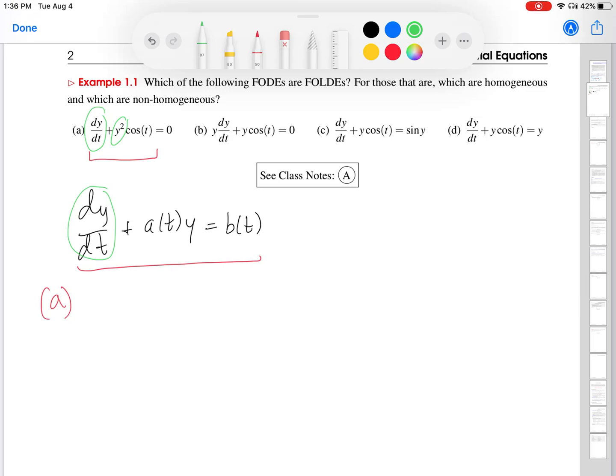If we compare the ODE for A to the standard form, we start seeing some similarities. DY over DT looks good. And then here's the first wrinkle. So, there's a Y squared. So, that is going to tell us already that this ODE is not linear. But let's say that we are trying to force it into being linear.